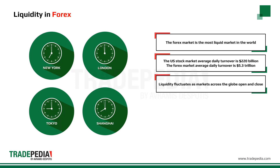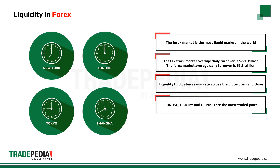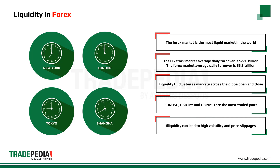Liquidity is different for each currency pair, but EURUSD, USD/JPY (US dollar/Japanese yen), and GBP/USD (British pound/US dollar) remain the most traded pairs and witness the most volume. While a liquid market is known for its steady movements and fixed prices, illiquidity can lead to high volatility and price slippages.